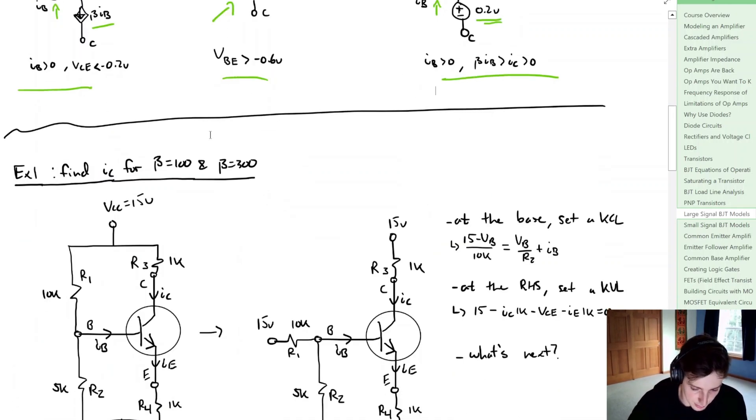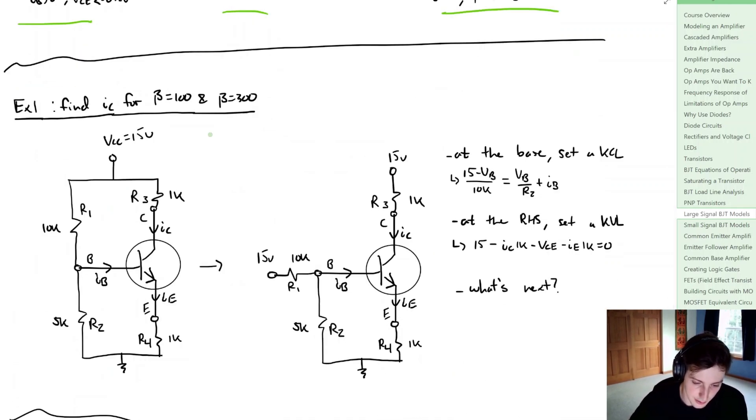Let's look at an example. In this example we are going to consider a gain or beta equal to 100 and 300.